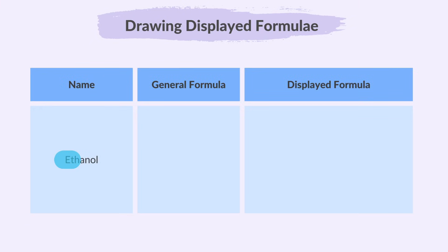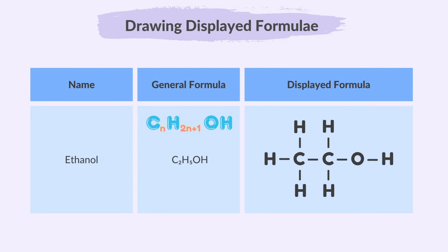For ethanol, the name contains eth, which indicates it has two carbon atoms. Since it ends with ol, we know it belongs to the alcohol family, meaning it contains an OH group. Using the alcohol formula CnH(2n+1)OH and setting n equal to 2, we get C2H5OH. So the displayed formula for ethanol looks like this.